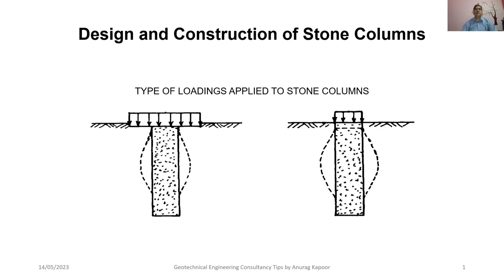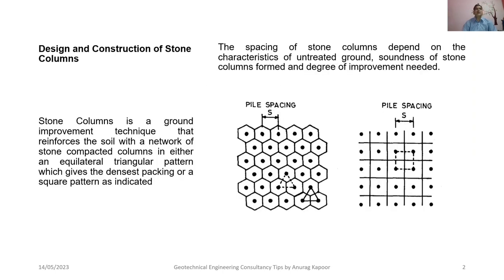This video is about the design and construction of stone columns. Here you have been shown a typical sketch of the types of loadings applied to stone columns. Stone columns is a ground improvement technique that reinforces the soil with a network of compacted stone columns in either an equilateral triangular pattern, which gives the densest packing, or a square pattern, as indicated on the right-hand side.